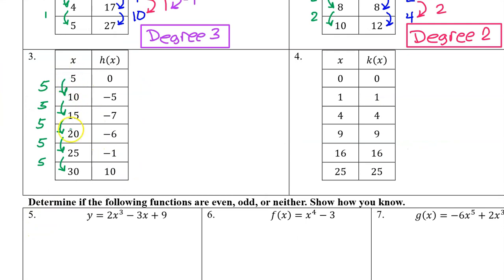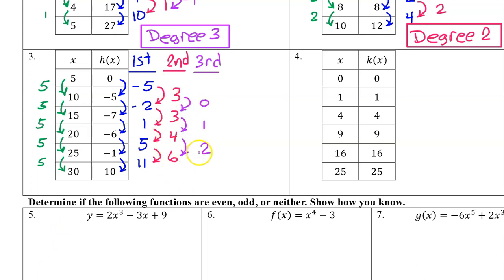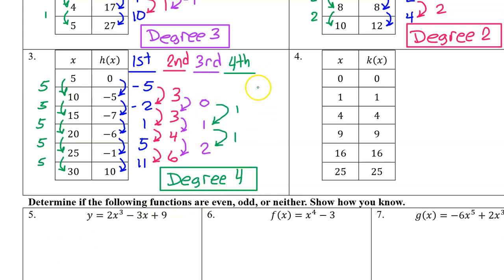For number 3, the input values show a common difference, so we can use the trick. Looking at the output values, the first differences are not constant, so h of x is not degree 1. The second differences are not constant either, so it's not degree 2. The third differences are not constant, so it's not degree 3. However, the fourth differences are constant, so h of x is degree 4.